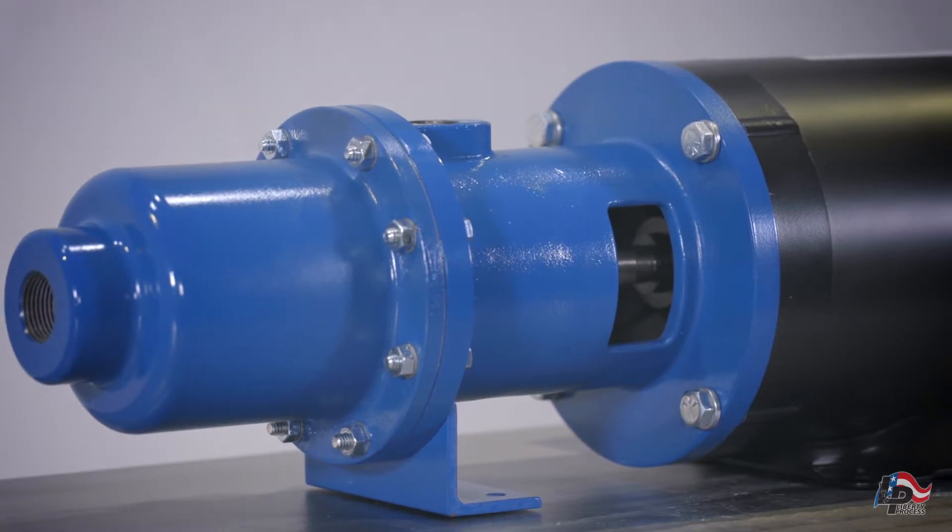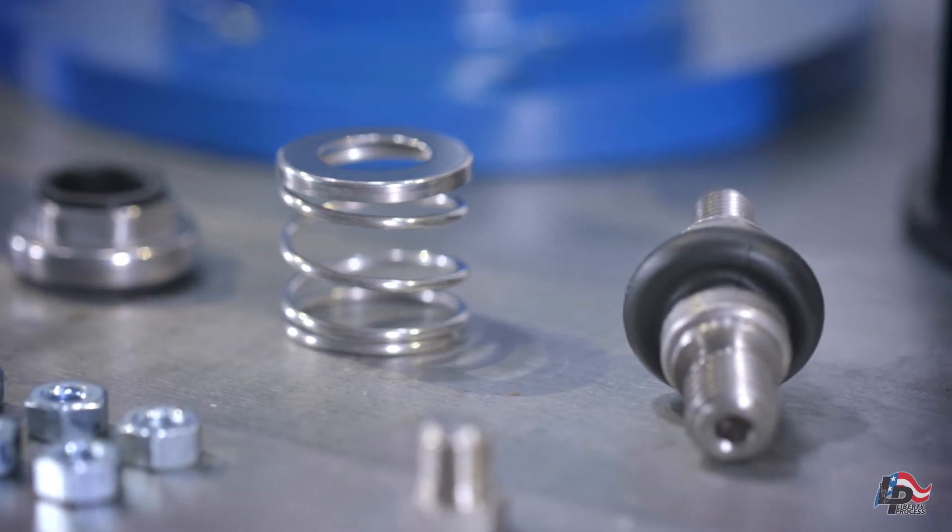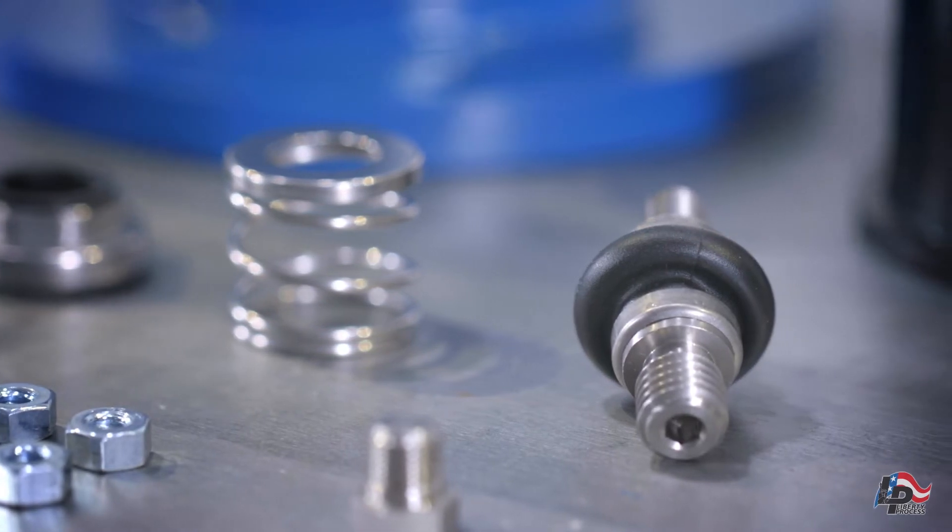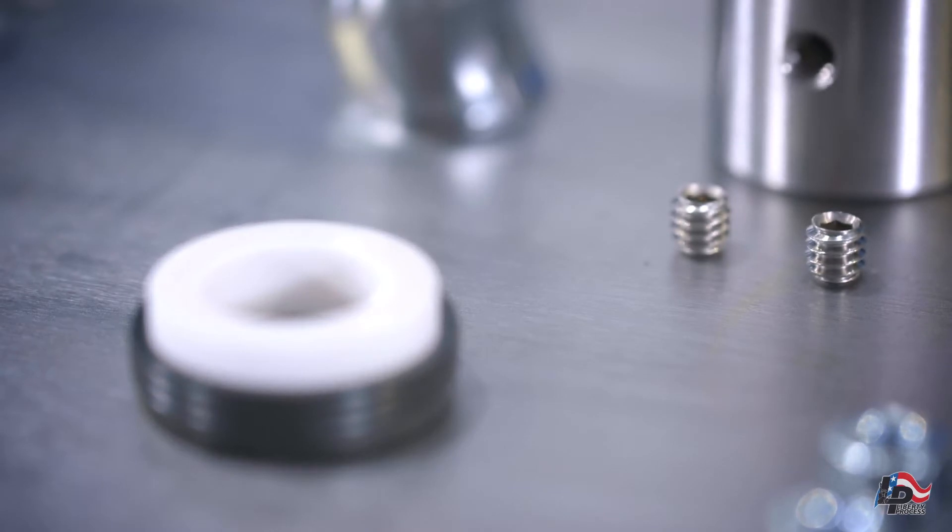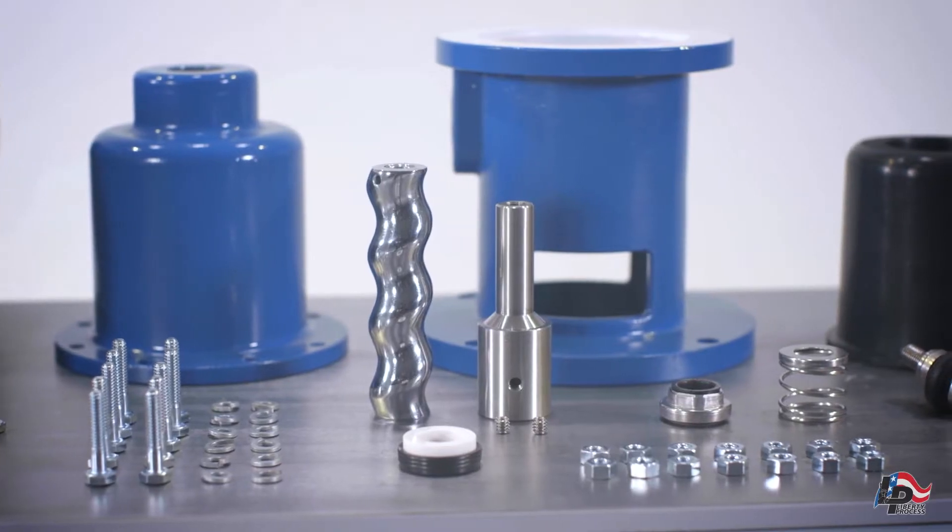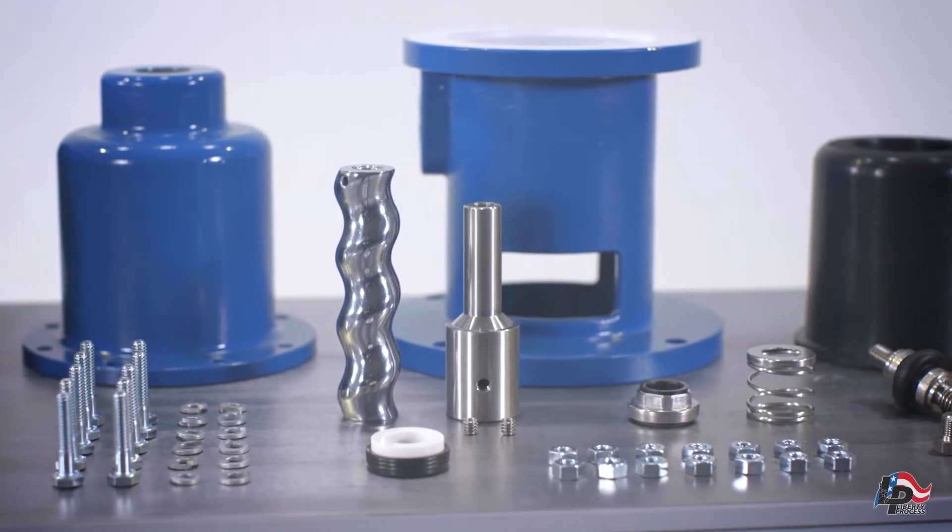The same pump disassembly procedures are also used for Liberty Process APM pump sizes 15, 33, and 44. For pump sizes APM 56 and APM 67, please refer to those specific pump disassembly videos and instruction manuals.